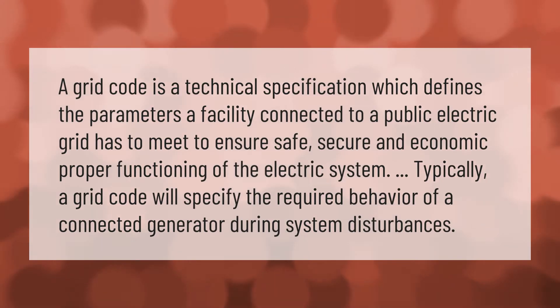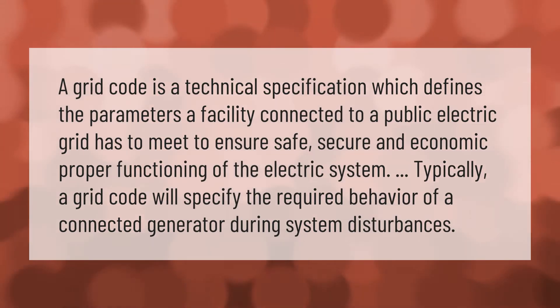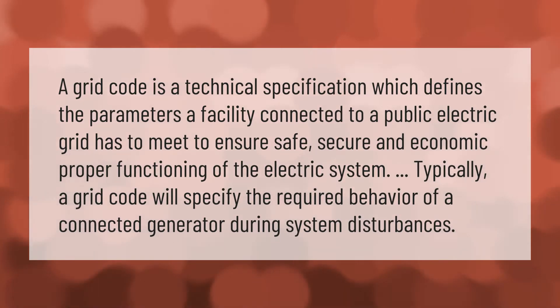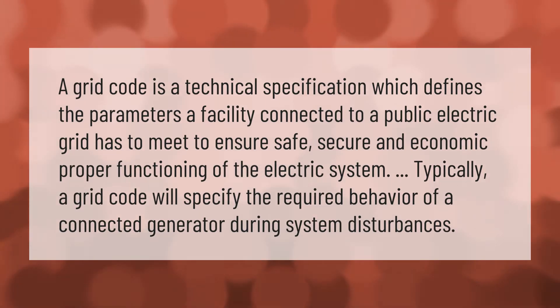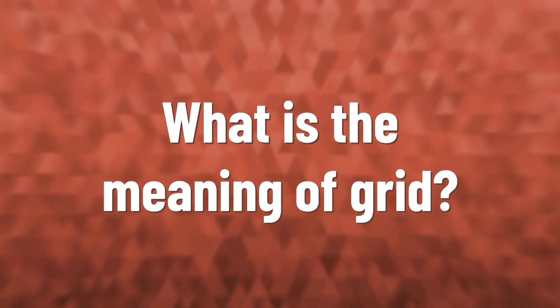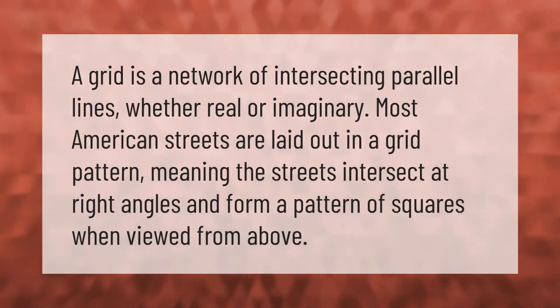A grid code is a technical specification which defines the parameters that a facility connected to a public electric grid has to meet, to ensure safe, secure, and economic proper functioning of the electric system. Typically, a grid code will specify the required behavior of a connected generator during system disturbances.